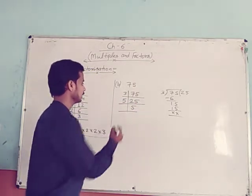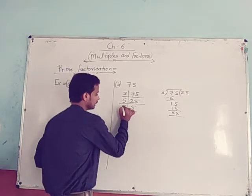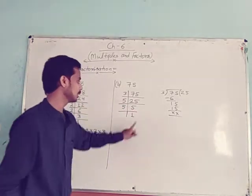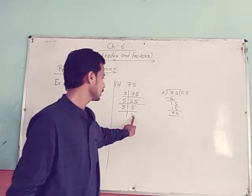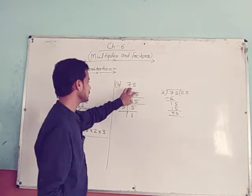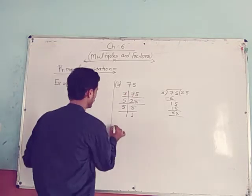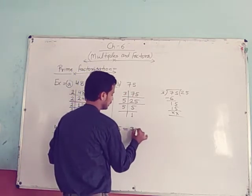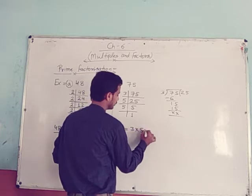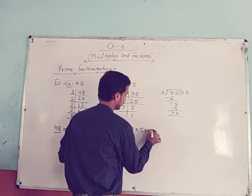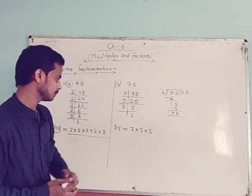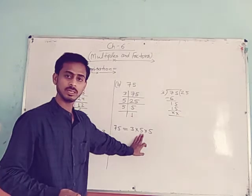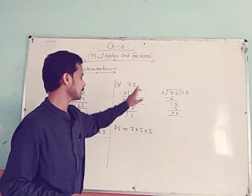Then again divide 5 by 5. So the prime factorization of 75 equals 3 × 5 × 5. Verify: 5 × 3 = 15, and 15 × 5 = 75.